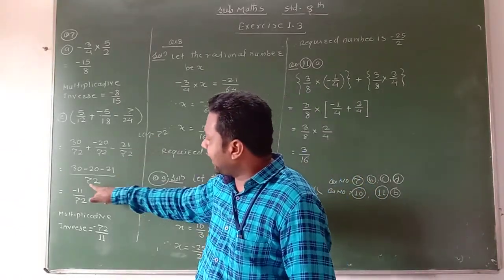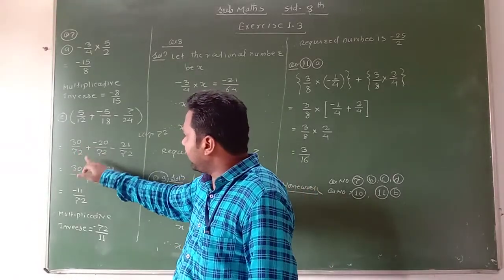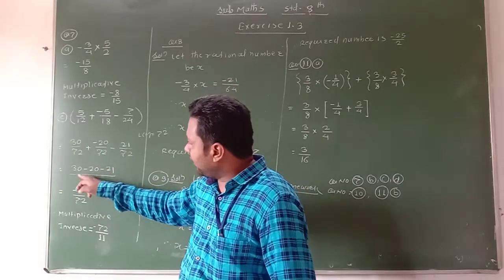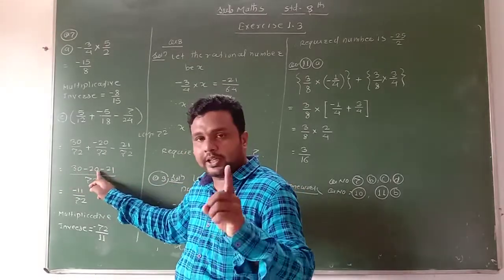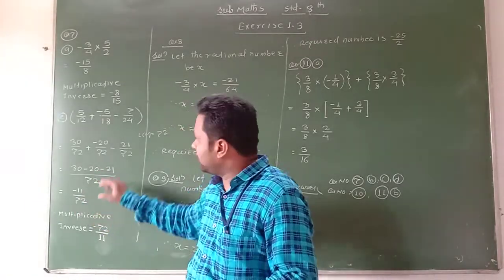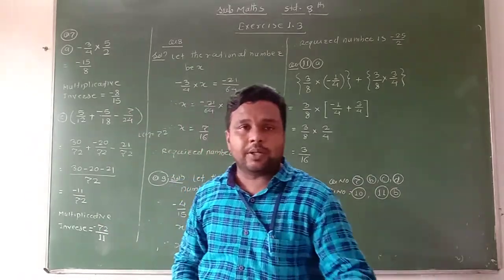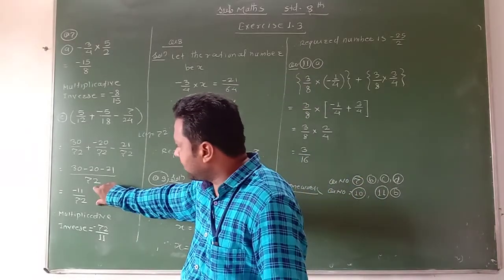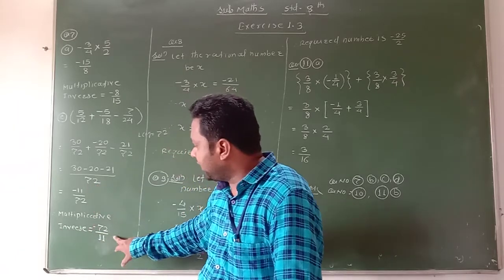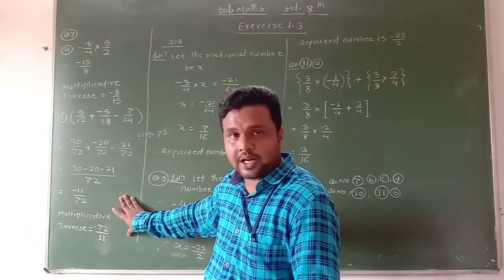In the next step, we write the common denominator 72. In the numerator: 30 plus minus 20 minus 21. Solving this: 30 minus 20 gives 10, and 10 minus 21 gives minus 11 upon 72. This is the answer for this question. But we have to find the multiplicative inverse. Therefore, we take the reciprocal: the multiplicative inverse of minus 11 upon 72 is minus 72 upon 11. And this is the answer.